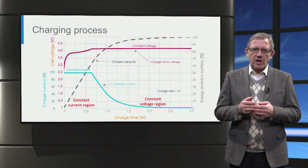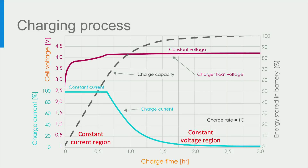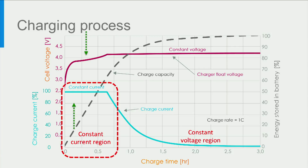Let us first start with the charging process. In this image, we can see the battery charging current, battery voltage and energy stored in the battery as a function of time, when a battery is charged. When the charging of a battery starts, it typically charges at a constant current equal to or less than the nominal current of the battery. During this period, the voltage of the battery increases as the battery gets charged. This is referred to as the constant current or CC charging region.